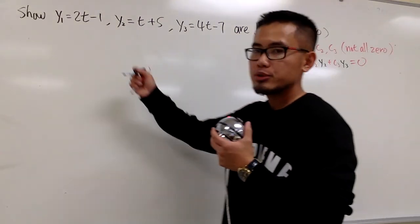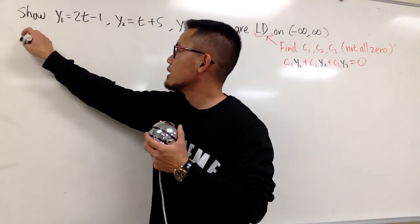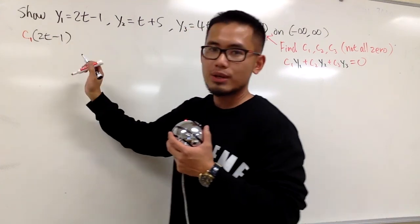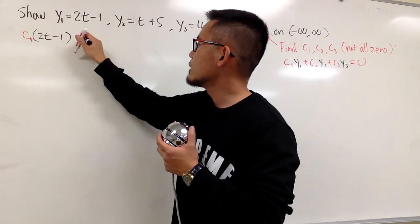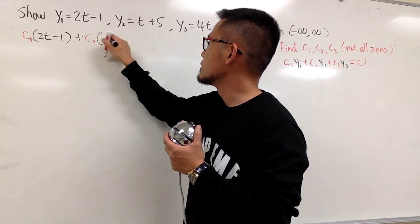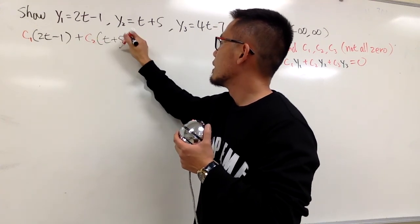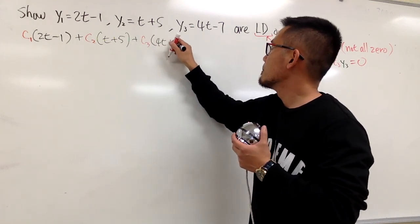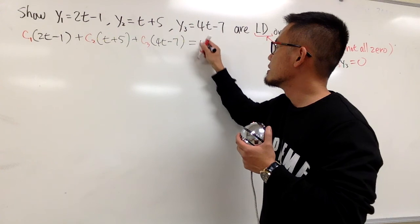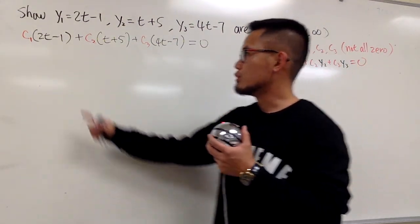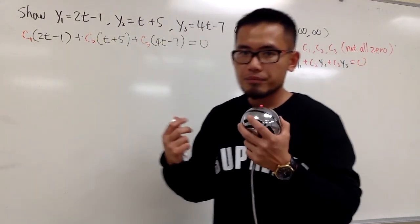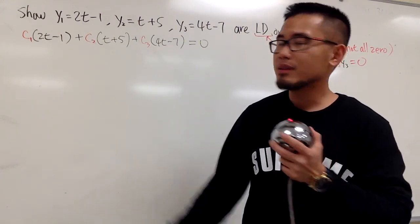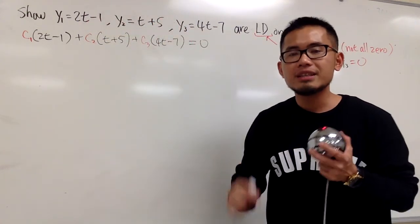I'm just going to set this up for you guys. I will have c1 times y1, which is 2t minus 1, and I will continue adding with c2 times the second function, which is t plus 5. And then the third one is plus c3 times 4t minus 7. And we make this equal to zero. And our goal is to give a combination of c1, c2, c3 and present that for the answer. If we can make that happen, then we can say these functions are linearly dependent.